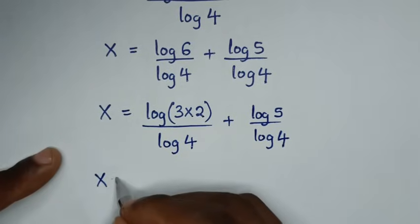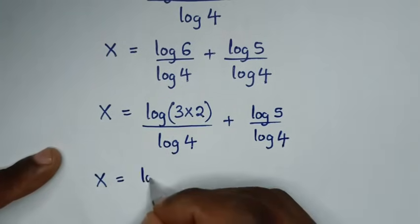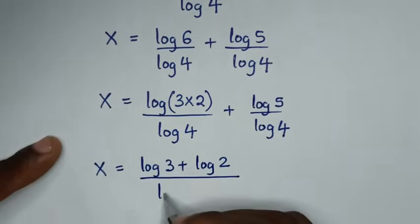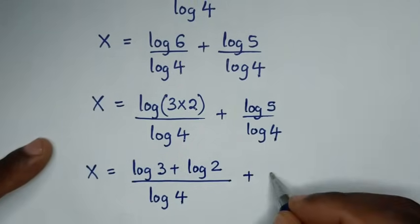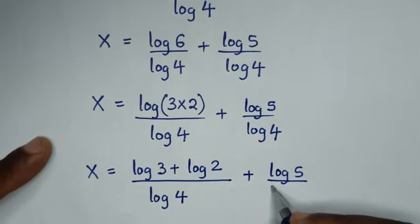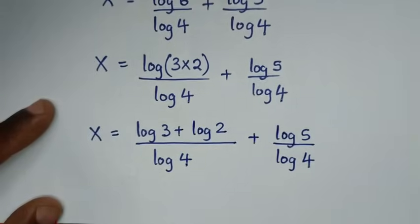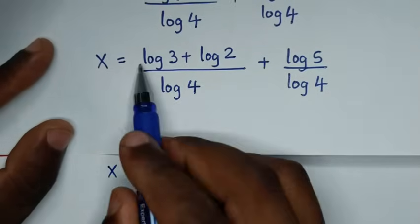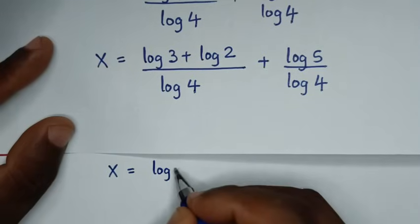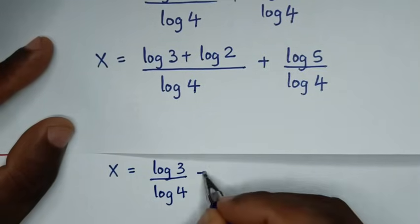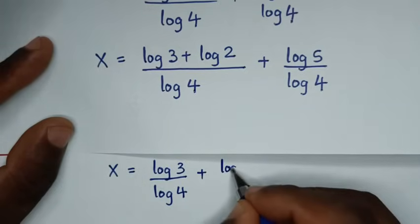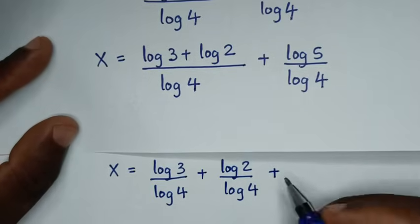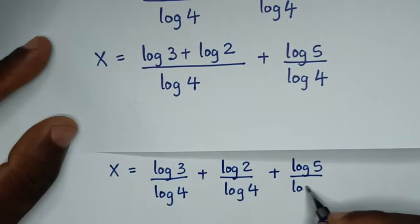Then log of 6 is the same as log of 3 times 2, which is the same as log of 3 plus log of 2, then over log of 4, plus log of 5 over log of 4. So it will be x is equal to log of 3 over log of 4 plus log of 2 over log of 4 plus log of 5 over log of 4.